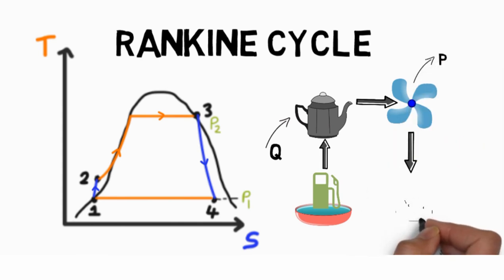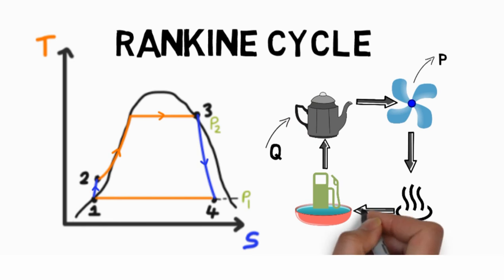Fourth, the wet vapor enters a condenser where it is condensed at constant pressure to become a saturated liquid.